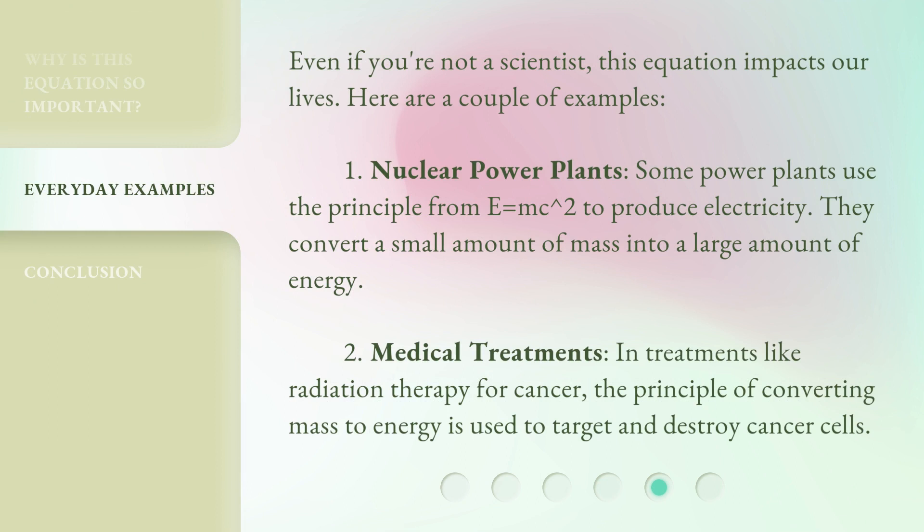1. Nuclear power plants. Some power plants use the principle from E equals mc squared to produce electricity. They convert a small amount of mass into a large amount of energy.